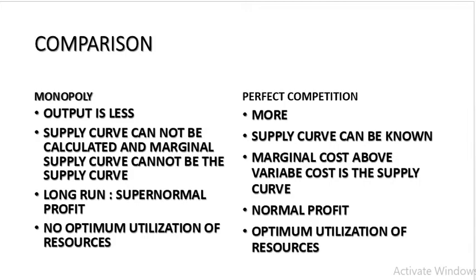Supply curve cannot be calculated under monopoly because the monopolist adopts price discrimination, so marginal cost cannot serve as the supply curve. But under perfect competition, supply curve can be derived — marginal cost above variable cost is the supply curve. Under both monopoly and perfect competition, in the short run the firm could have super normal profit, normal profit, or incur minimum loss. But in the long run, monopoly will stay only if it gets super normal profit; under perfect competition in the long run the firm gets normal profit. Under monopoly there is no optimum utilization of resources because they deliberately supply less to charge more price; under perfect competition it is optimum utilization.